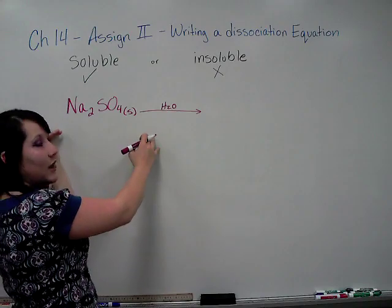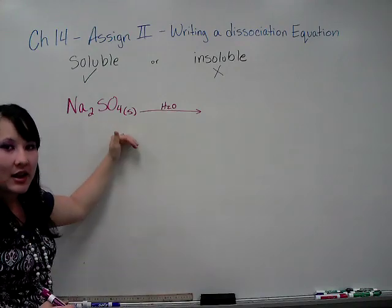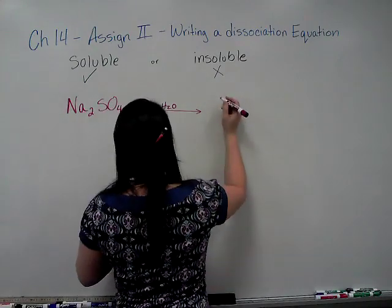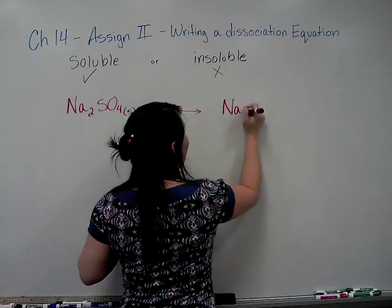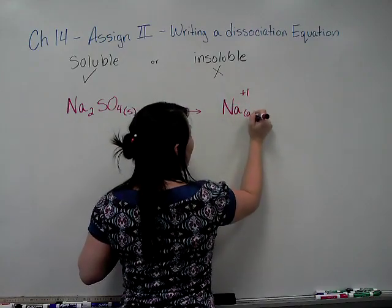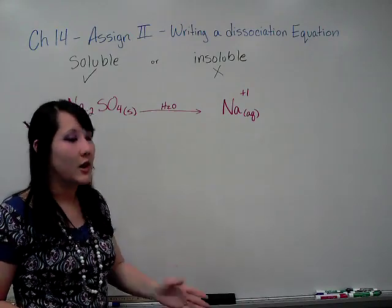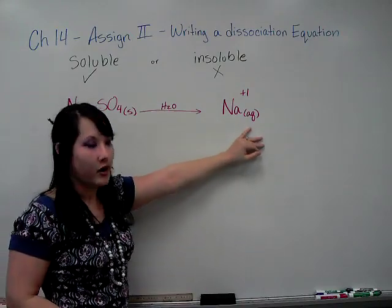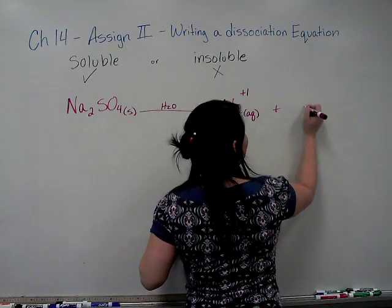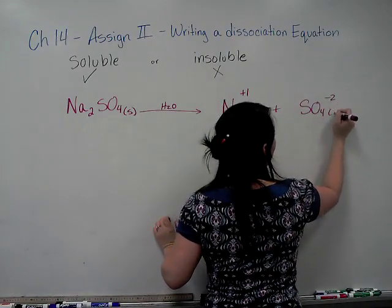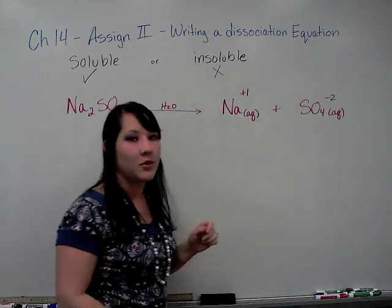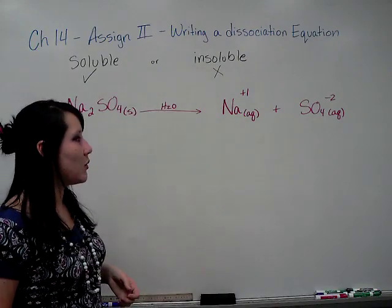The ions will break apart into the cation and the anion. So you would end up with Na plus one, and we're going to break up to sulfate, which is SO4 minus two, and that will also be labeled aqueous because it's dissolved in water.